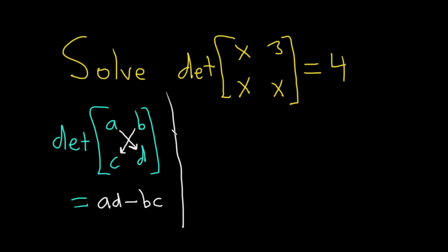In this particular problem we have all of these x's. Let's go ahead and apply this formula to our determinant here. This would be x times x, which is x squared, and then minus 3 times x. So x squared minus 3x, and all of this is equal to 4.